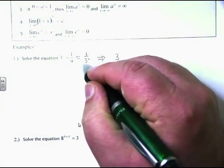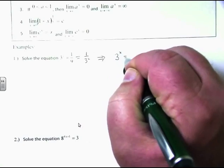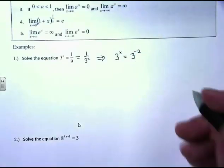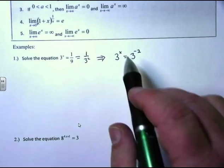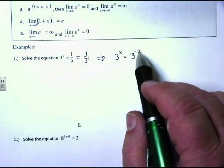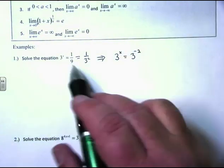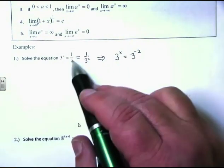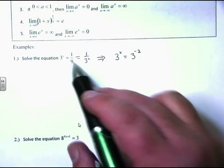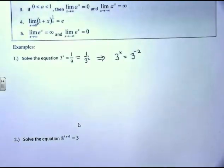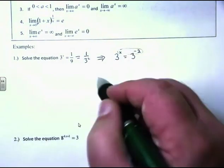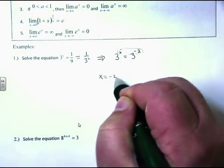When I bring the denominator to the top, the exponent becomes negative. So 3 to the x equals 3 to the negative 2, because 3 to the negative 2 is the same as 1 over 3 squared, which is 1/9. When the bases are equal, the exponents must be equal. Therefore, x equals negative 2.